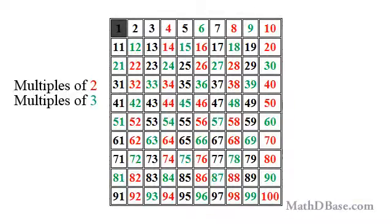Then, starting at 3, color every third number in green — 6, 9, 12, 15, etc., to 99. These numbers are all multiples of 3.